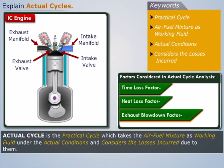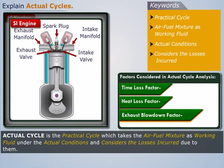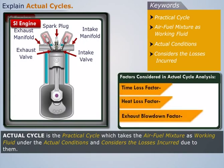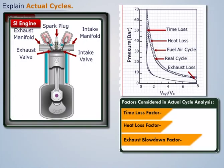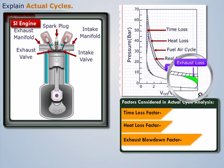Due to these losses, the actual cycle of an IC engine, say SI engine, on PV diagram is different from the fuel-air cycle and can be shown as here. Region 1 represents the time loss, region 2 represents the heat loss, and region 3 represents the exhaust loss.